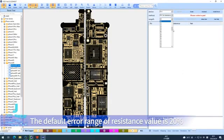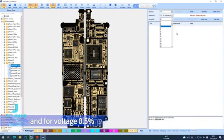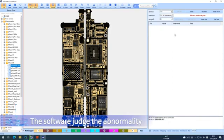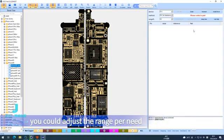The default error range of resistance value is 20%, and for voltage 0.5%. The software judges the abnormality and normality based on this error range. You could adjust the range per need.